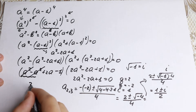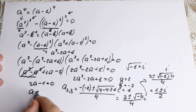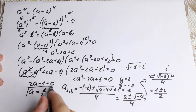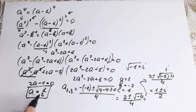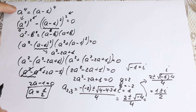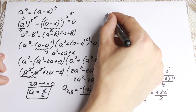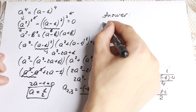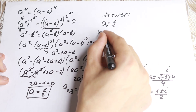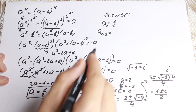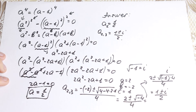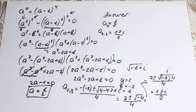So our complete answer is: a₁ equals one half, and a₂ and a₃ equal (one plus-or-minus i) over two. We solved it by inspection initially and got a equals one half, but with this method we find all roots including the two complex ones. That's my approach — I hope you enjoy it. If you do, please leave a like and write any comment. Thank you so much for watching, have a great day and see you in the next videos.